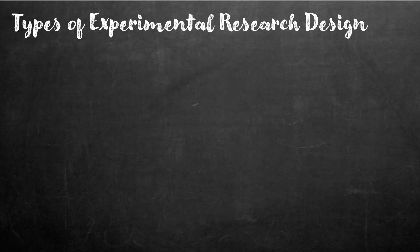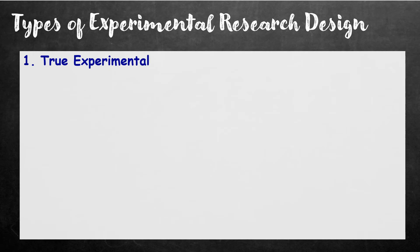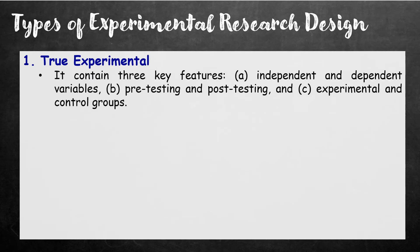These are the types of experimental research design. First, true experimental. It contains three key features: independent and dependent variables, pre-testing and post-testing, and experimental and control groups. Sa isang true experiment, ang effect ng isang intervention ay tinatest sa pamamagitan ng pag-compare ng dalawang groups, kung saan ang isang group ay ina-expose sa intervention — ang tawag ay experimental group.